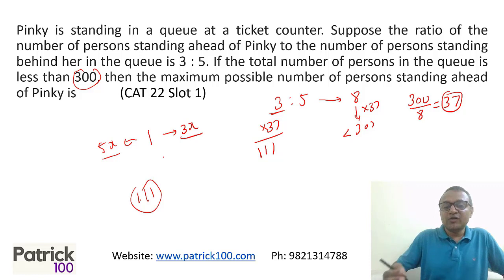So we have a ratio of 3 and 5. Total 8. This total 8 has to be less than 300. Which is 37 times. So 3 to 37 will give you 111. You get the answer quickly. If you know the right approaches, it becomes easy and fast to get the answer.